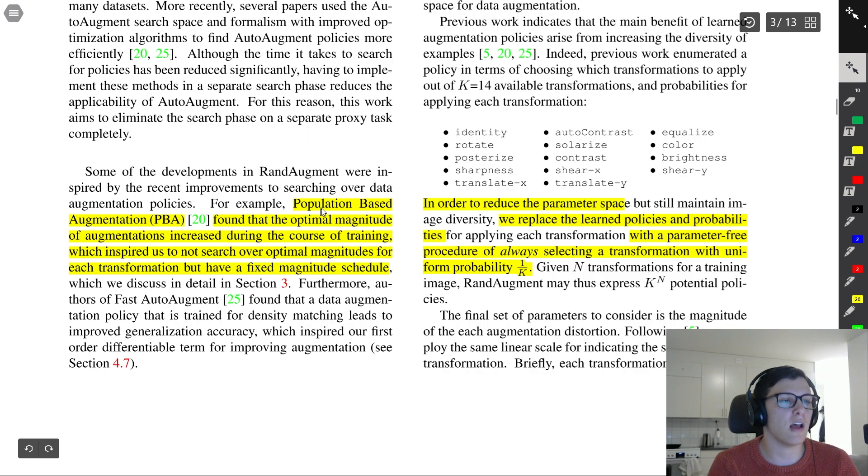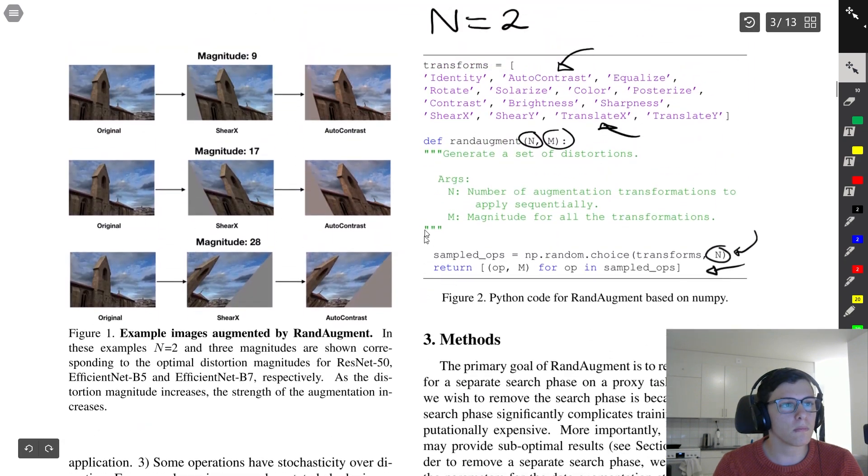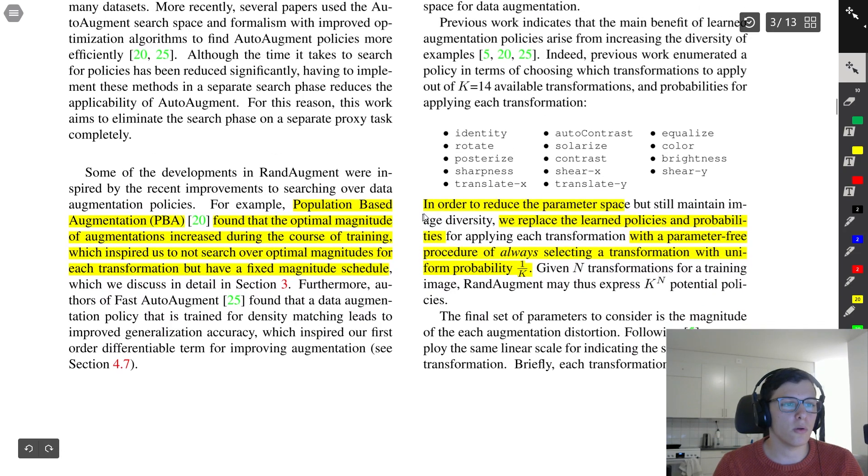The paper mentions that population-based augmentation (PBA) found that the optimal magnitude of augmentation actually increased during the course of training. That inspired them not to search over optimal magnitudes for each transformation, but rather just have a fixed magnitude scale. In that way, they also reduce that search space, which this paper is all about.